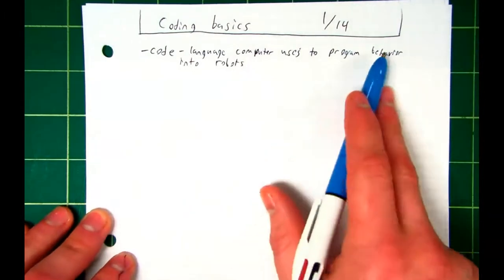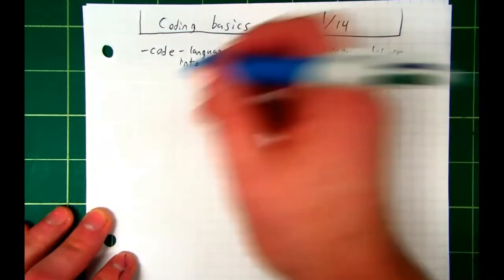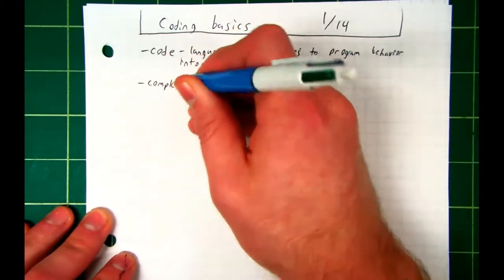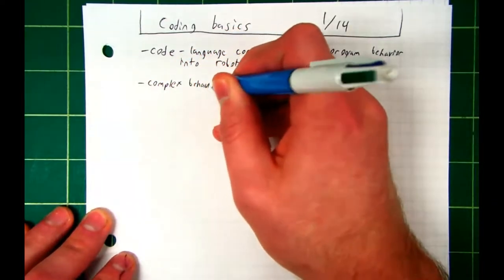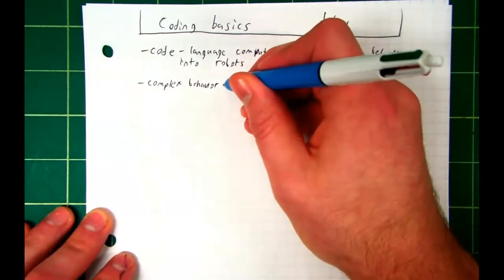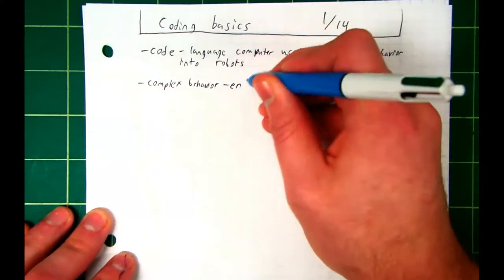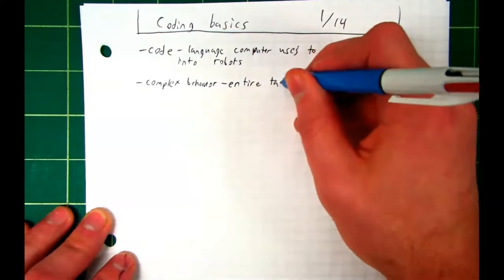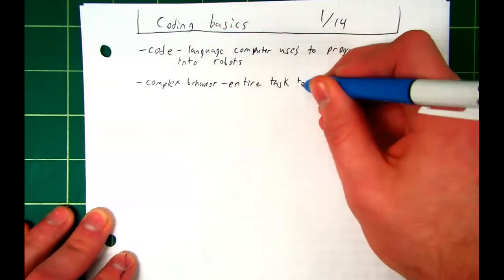So let's talk about what behaviors are. The first one we're going to define is what we call a complex behavior. The complex behaviors are the entire task that your robot will perform. So entire task to be performed.